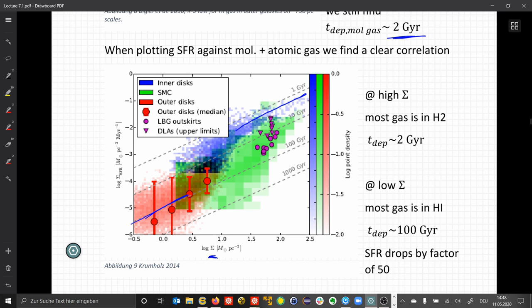When moving from the molecular to the atomic gas in a galaxy, the star formation rate drops by a factor of 50. This is what we observe.